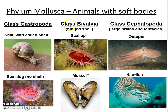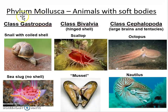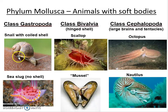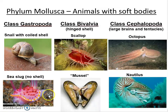Phylum Mollusca contains the class Gastropoda — remember the taxonomic levels: domain, kingdom, phylum, class. Gastropoda literally means 'stomach foot': gastric means stomach, and poda means leg or feet. Looking at the snail, it basically is a stomach foot — a muscular foot on the bottom with the visceral mass and stomach inside. There are terrestrial forms, but also a huge number of sea slugs, with the former breathing on land and the latter using gills in water.